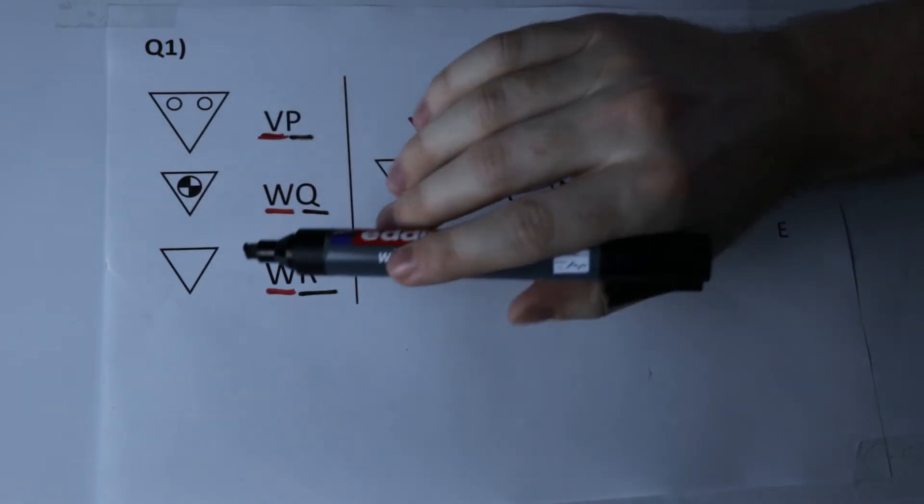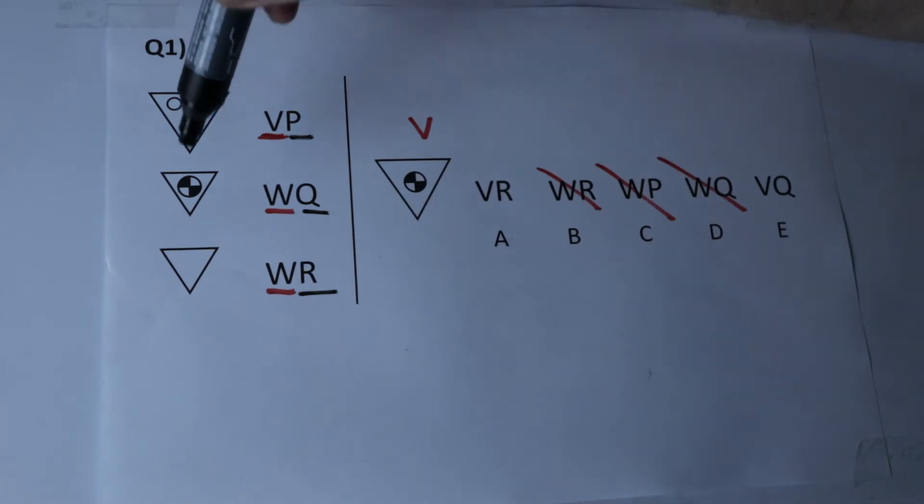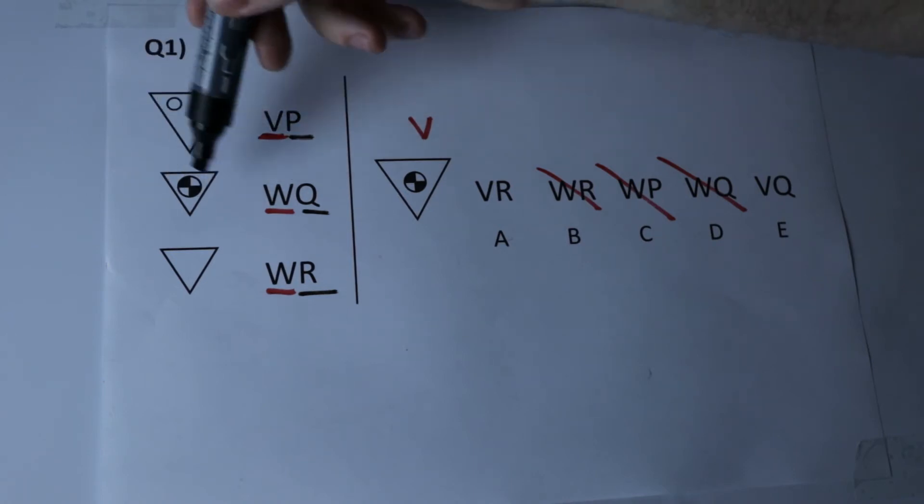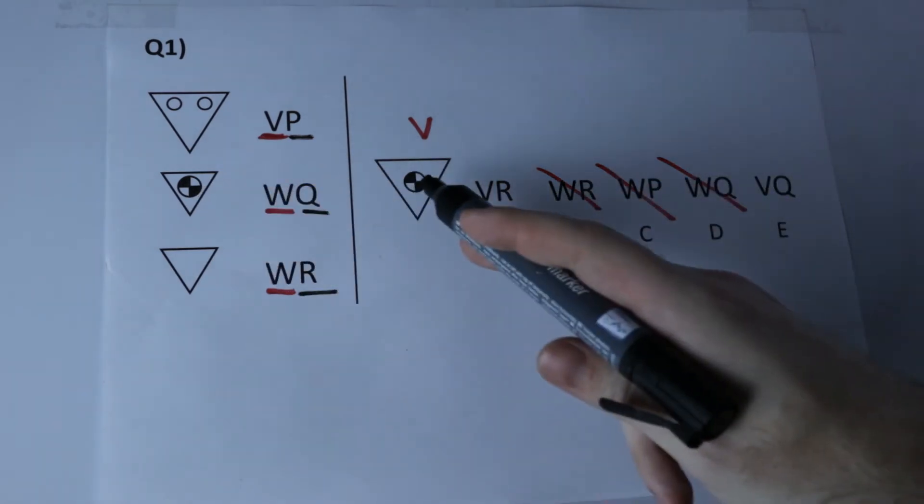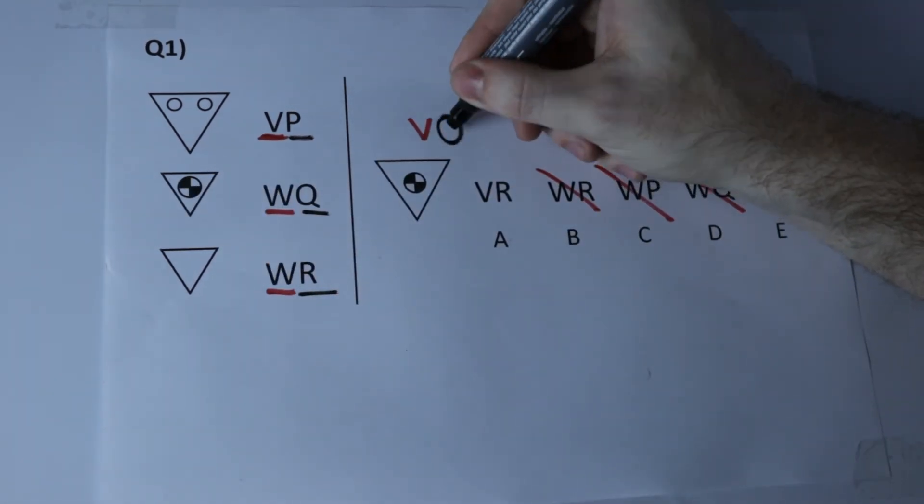Now the only thing that I can see which is unique to each of them is what's inside of the shape. So P must represent two white circles, Q must represent a circle split in two quarters with two shaded black and R must represent absolutely nothing. Look at the shape we're given, it matches up with the centre shape therefore it must be a Q.